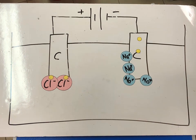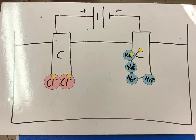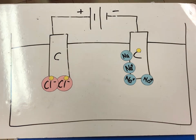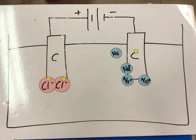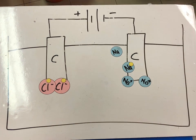At the negative electrode, each sodium cation will gain an electron and be reduced to sodium metal. Another sodium cation will similarly be reduced to sodium metal.